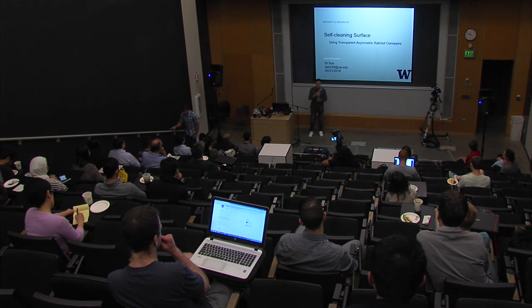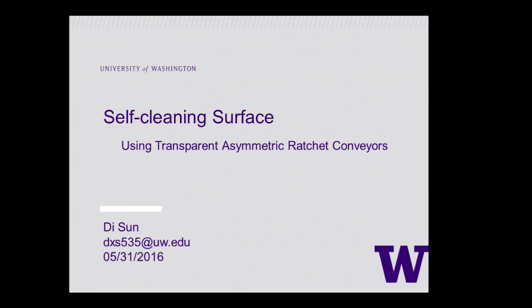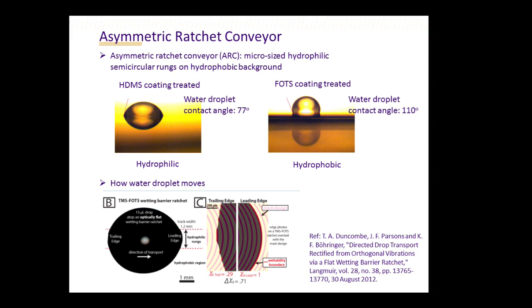Good afternoon everyone. I'm Dee Sun from Professor Karl Böhringer's MAMS Research Lab. Today I'd like to introduce our self-cleaning surface technology using transparent asymmetric ratchet conveyors. The microfabrication process creates micro-sized patterns on the surface instead of uniform coating. With that microstructure, we can control water droplet movement on the surface to clean surface contaminants away. Surface energy is characterized by applying water droplets and measuring surface contact angles. If the surface is treated with HDMS material, the contact angle is smaller than 90 degrees, meaning the surface is hydrophilic.